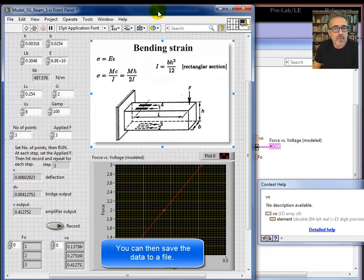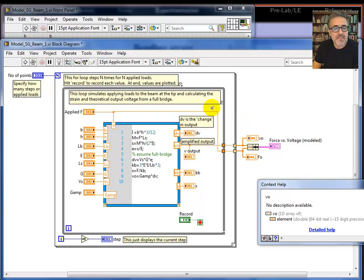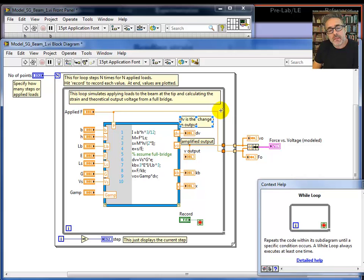The whole point of this was to build this simple little model that simulates what a strain gauge output will give you. Full bridge. I wanted to use that as a model in another VI that I'm going to show you shortly that you can use to actually automate the calibration process when you go to lab.